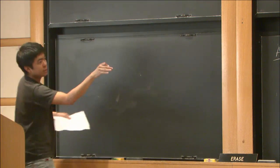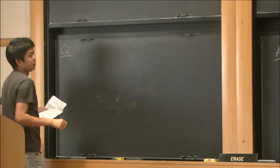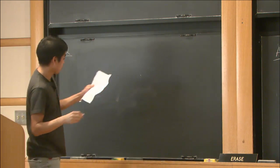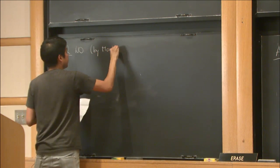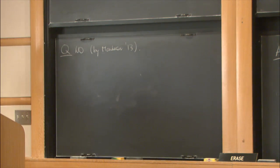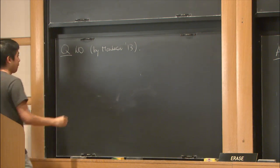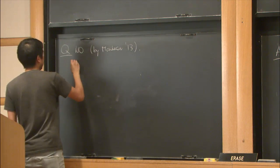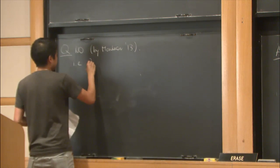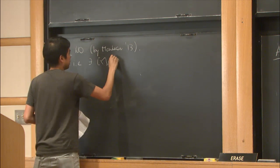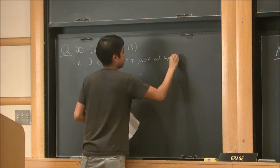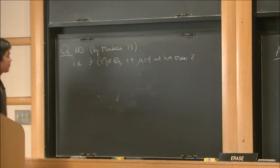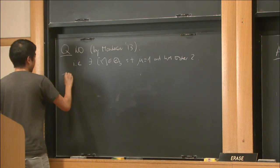The answer to the question is no, and this is by Manolescu in 2013. The fact that it doesn't split is the same as saying there doesn't exist an element Y in θ_H³ such that μ equals 1 and has order 2. How is this proved? The theorem of Manolescu is the following.